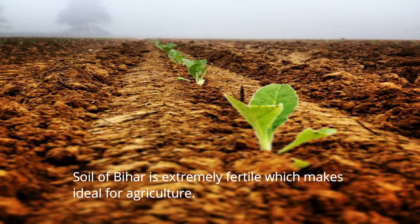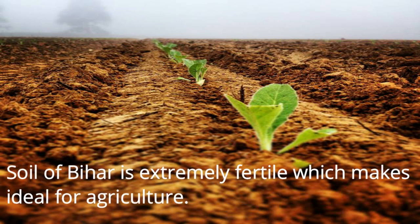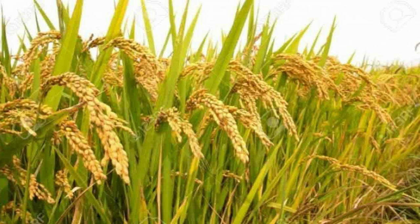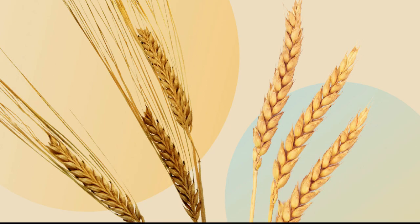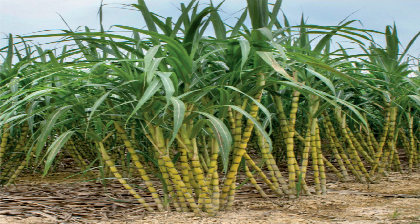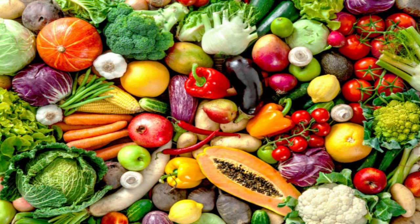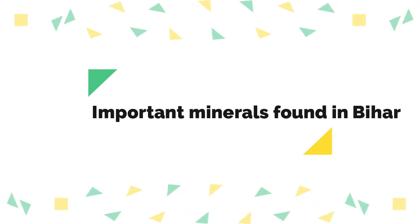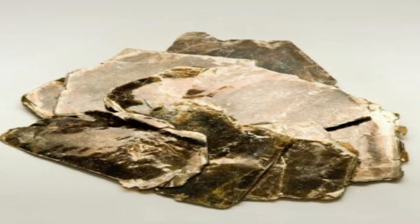The soil of Bihar is extremely fertile, making it ideal for agriculture. Rice is the main crop grown here; other crops like wheat, corn, barley, pulses, and sugarcane are also grown. Fruits and vegetables are grown on a large scale. The main industries are based on agriculture, steel, and metal. Important minerals found in Bihar include bauxite, mica, and dolomite.